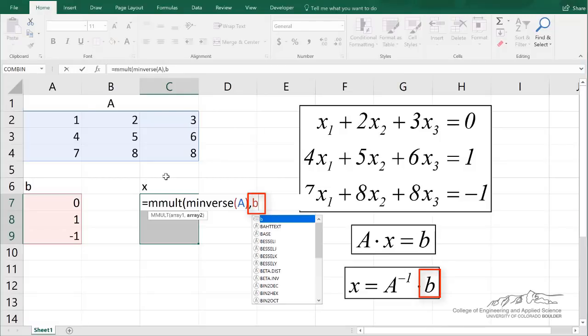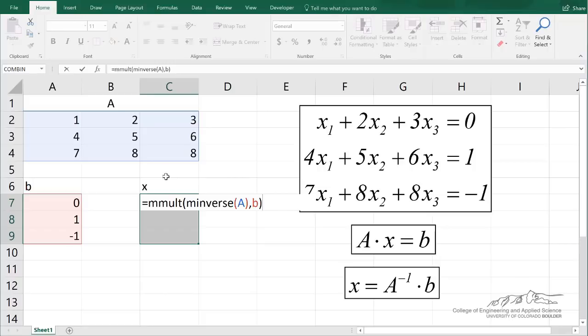And then we have to multiply that by b. So I'm just going to put a b in there. And I close that with a right parenthesis. And I'm going to do control, shift, enter.